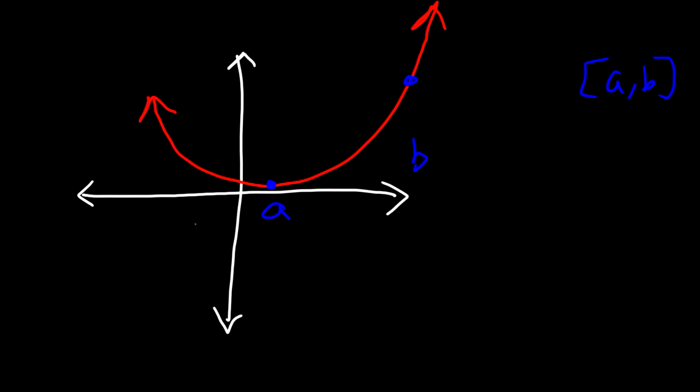The average rate of change gives us the slope of the secant line. And a secant line touches two points on a graph. A tangent line only touches one point on a graph. So that would be a tangent line. So keep that in mind. The average rate of change represents the slope of the secant line.